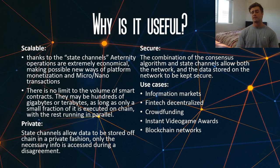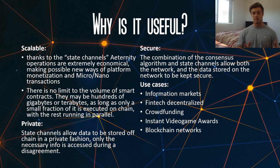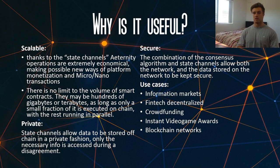So why is it useful? The first reason is that it's scalable, and this is due to the state channels. They make operations extremely economical, enable new ways of platform monetization, and make micro and nano transactions possible. There is no limit to the volume of smart contracts — they may be hundreds of gigabytes or even terabytes. As long as only a small fraction of the smart contract is executed on-chain, the rest will run in parallel seamlessly.